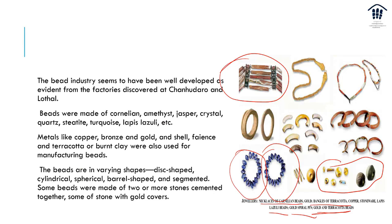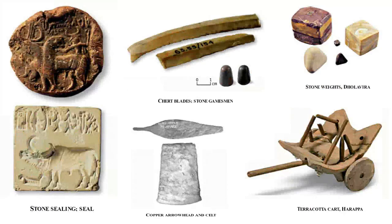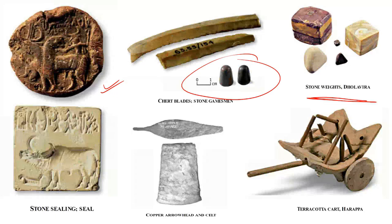Beads are of different types: disc-shaped, cylindrical, and spherical. Some were made of two or more stones cemented together, and some had gold covers. There are also different types of seals — including a round seal — and chert blades. Stone games were played at that time, and there are stone weights as well. Interestingly, a binary system of weights — 1, 2, 4, 16 — was found for counting and measurement.